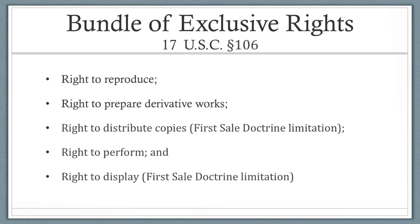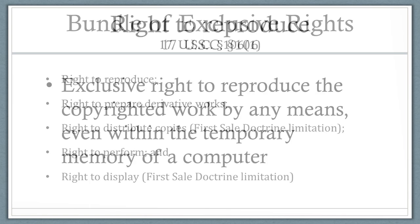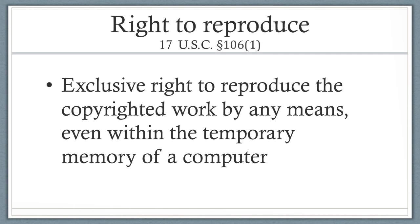The copyright owner — in the case of artworks, this is generally the artist — is entitled to a bundle of exclusive rights. These are: the right to reproduce, the right to prepare derivative works, the right to distribute copies, the right to perform, and the right to display. Copyright infringement occurs when one violates any of these rights. The right to reproduce is perhaps the most basic of the exclusive rights. It is the exclusive right to reproduce the copyrighted work by any means, even within the temporary memory of a computer. This right protects against copying in any medium, including uploading files to the internet and downloading attachments, files, and graphics from websites. The reproduction right may apply when works of art are broadcast, even for a few seconds, subject only to a fair use defense.